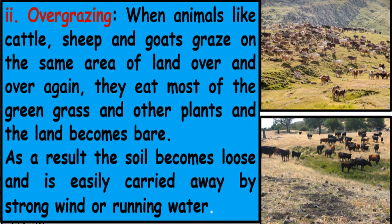2. Overgrazing. When animals like cattle, sheep and goats graze on the same area of land over and over again, they eat most of the green grass and other plants and the land becomes bare. As a result, the soil becomes loose and is easily carried away by strong wind or running water.